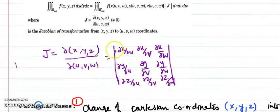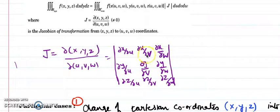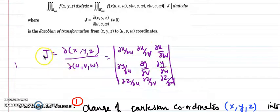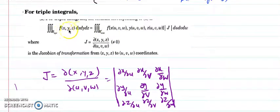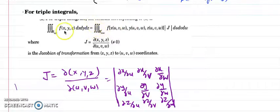To calculate the Jacobian, we find the determinant of the current variables x, y, z with respect to u, v, w. The partial derivatives of x with respect to u, v, w form the first row; similarly for y and z. Whatever value you get is called the Jacobian of the transformation. So when you have any function of three variables and it cannot be solved easily in x, y, z, you can change it into new variables using this general approach.